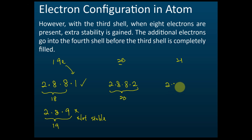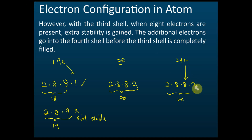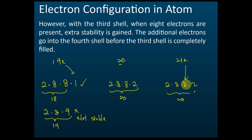For the atom with 21 electrons, the arrangement starts as 2, 8, 8, 1 for 20 electrons, and then the extra electron is added into the third shell — not the fourth shell — for a certain reason you don't need to know in our syllabus. This makes the arrangement 2, 8, 9, 2. You don't need to be shocked by this — the third shell can hold up to 18 electrons. But for our syllabus, you only need to know the first 20 elements.